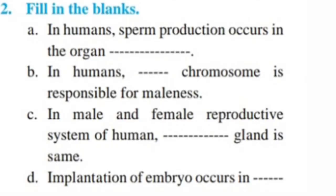Question 2: Fill in the blanks. A. In humans, sperm production occurs in the organ. Answer: Testes.